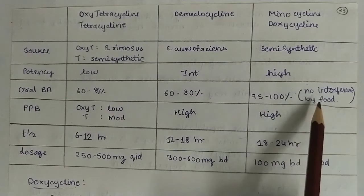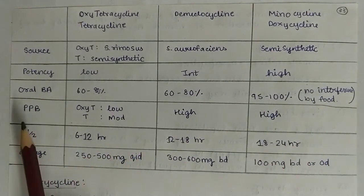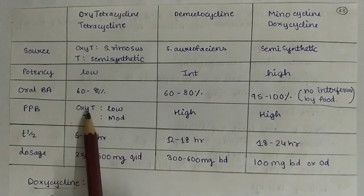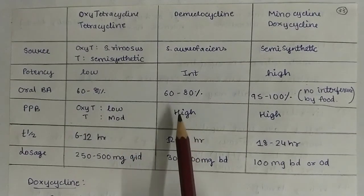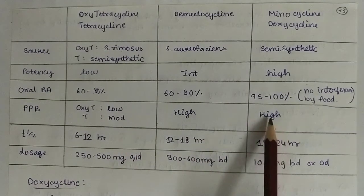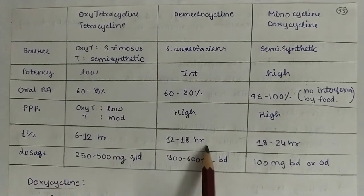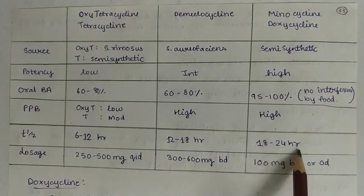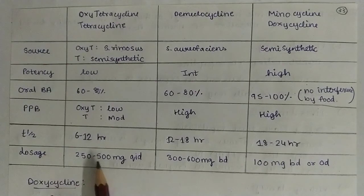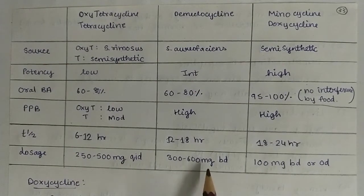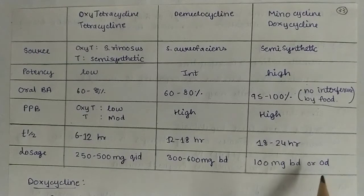This is because of no interference with food. Plasma protein binding: oxytetracycline is low, tetracycline is moderate, and demeclocycline, minocycline, and doxycycline are high. T-half: 6–12 hours, 12–18 hours, and 18–24 hours. Doxycycline is the longest acting drug. Dosage: 250–500 mg QID; 200–600 mg BD; and 100 mg BD or OD for doxycycline and minocycline.